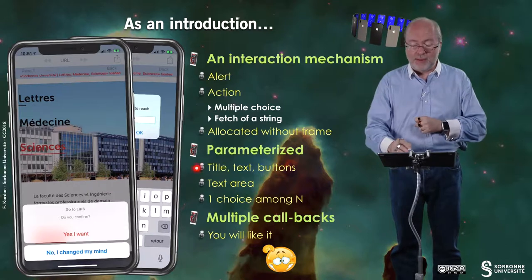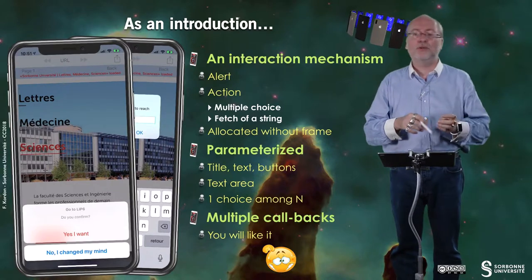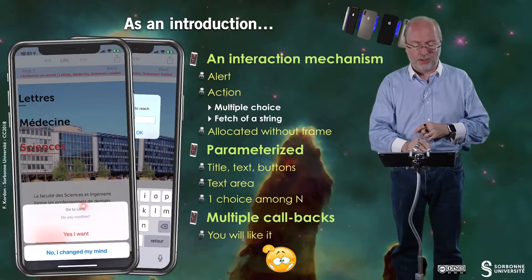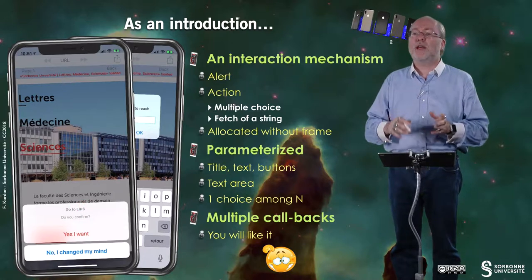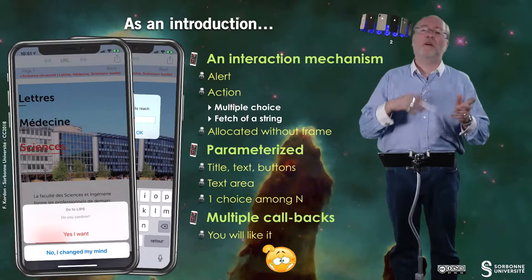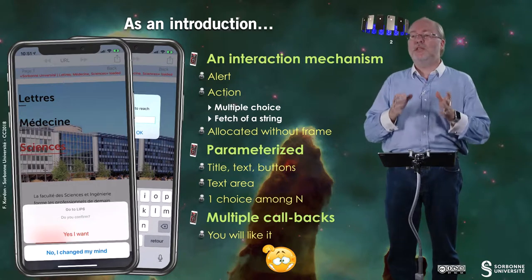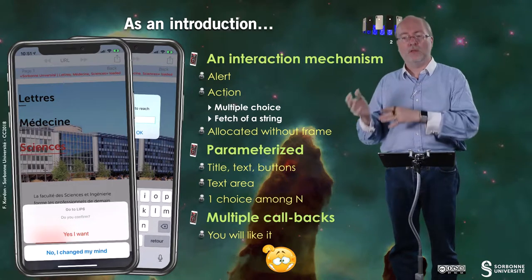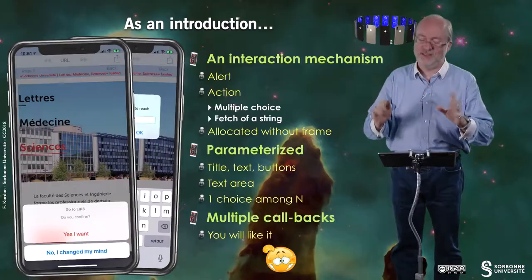You can parameterize it - you can have a title, you can have text, the title here, the text here. You can have buttons, you can have text area. Usually it's one choice among n choices. And you will see that this object generates a sort of cascade of callbacks.